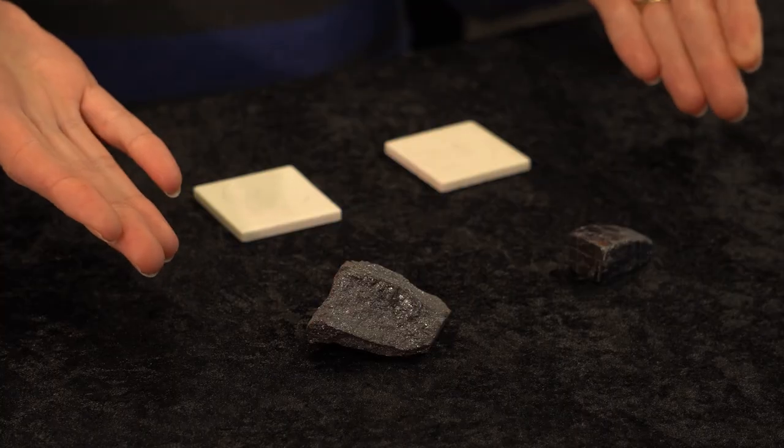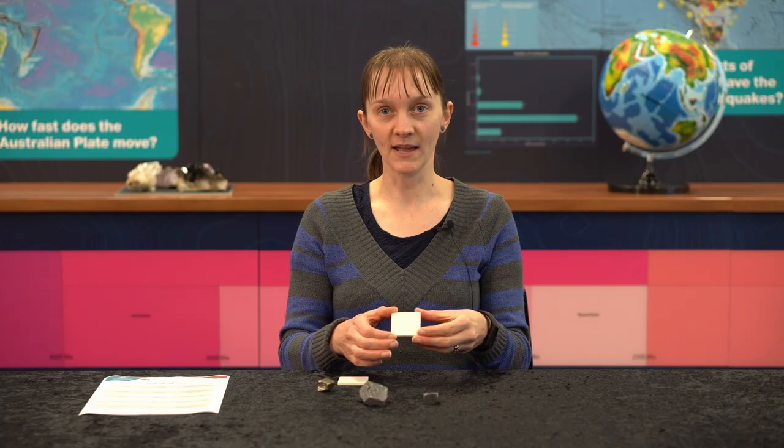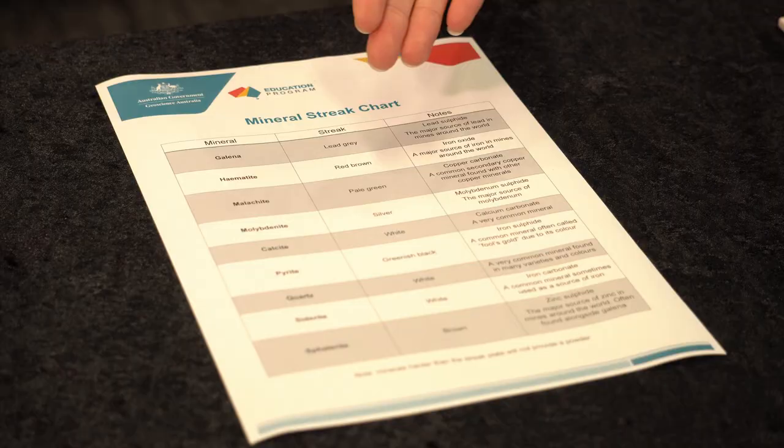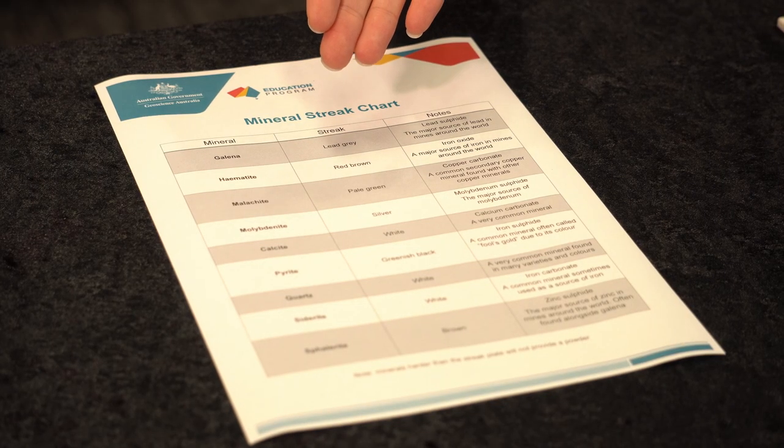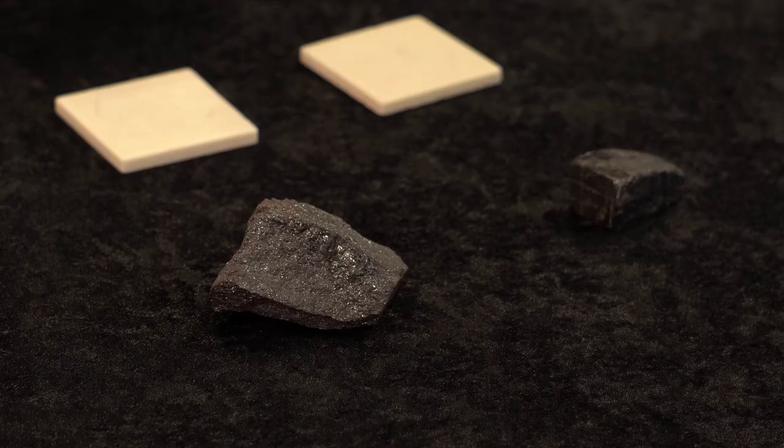Some specimens of the same mineral can be different colours, but if you do the streak test on them they will always have the same powdered colour or the same streak. For this activity you will need various unknown specimens, streak plates, and a mineral streak identification chart. Today I'm going to use the streak test to try and identify these two unknown minerals which look quite similar.